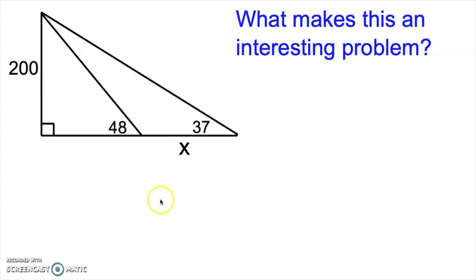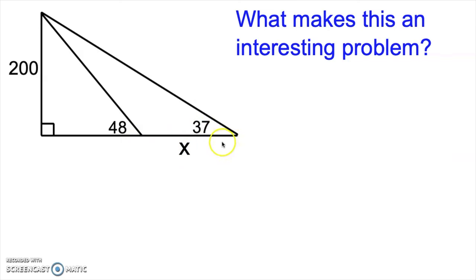That means we have to pay attention to what triangles we have information about. What makes this an interesting problem is that the thing we're looking for — the x right here — is part of this non-right triangle. In other words, there's no right triangle in this picture that I could use to solve for this length all by itself. Now before we solve this, let's take a look at some other versions of a very similar picture that would not be as interesting.